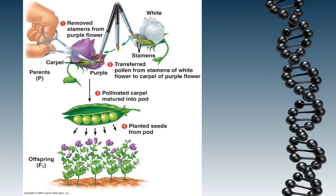He used pea plants as his organism of choice to study heredity, and as you can see in this diagram, he took the reproductive parts of a flower. The two primary reproductive parts are the anthers, which you can see right here with the little yellow tip, and they produce the pollen — the pollen is like the male part of the flower, kind of like sperm in animals. And then what we call the carpel or the pistil, which is outlined right here, is like the female part of the flower. That produces the egg, so the pollen produces the sperm, and the carpel produces the egg, and the sperm and egg come together.